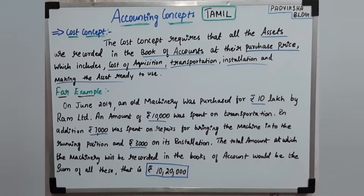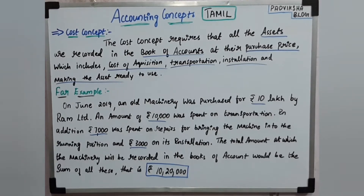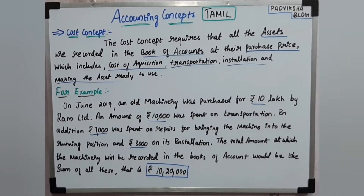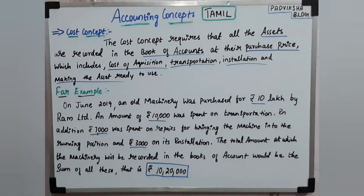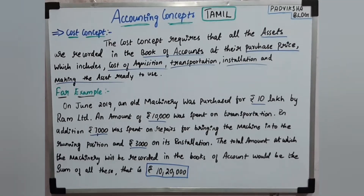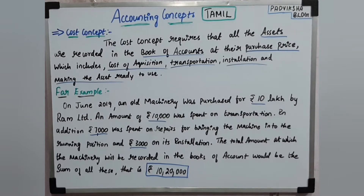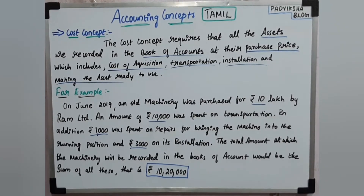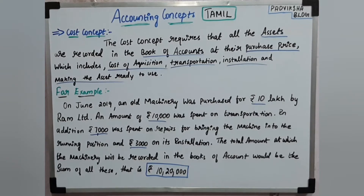The showroom person says they can deliver the TV. So the transportation cost is extra — the TV costs 40,000 and transportation charges are 1,000. So the total so far is 41,000.